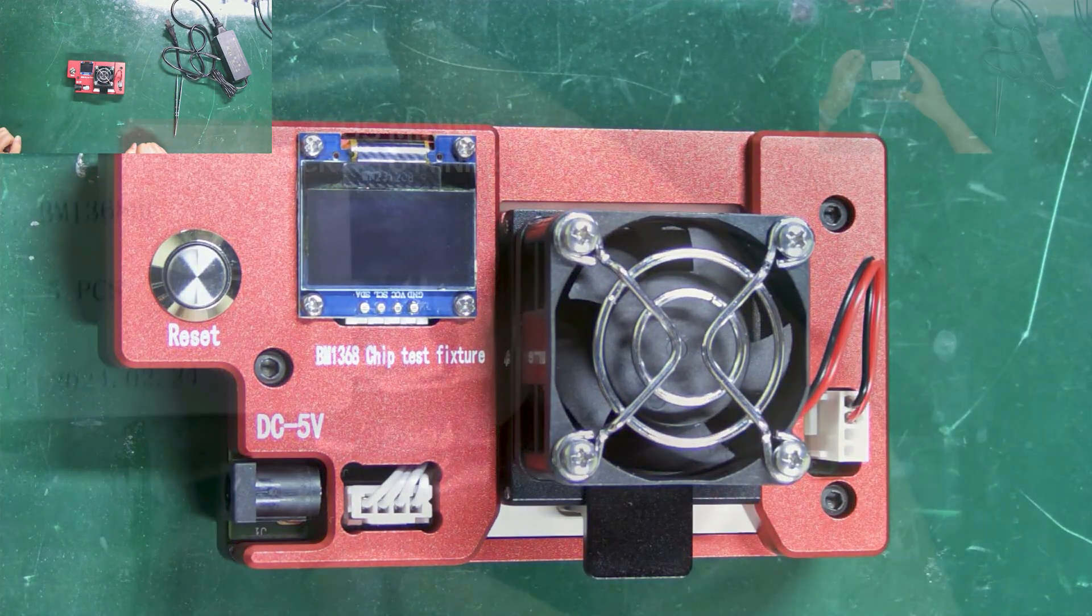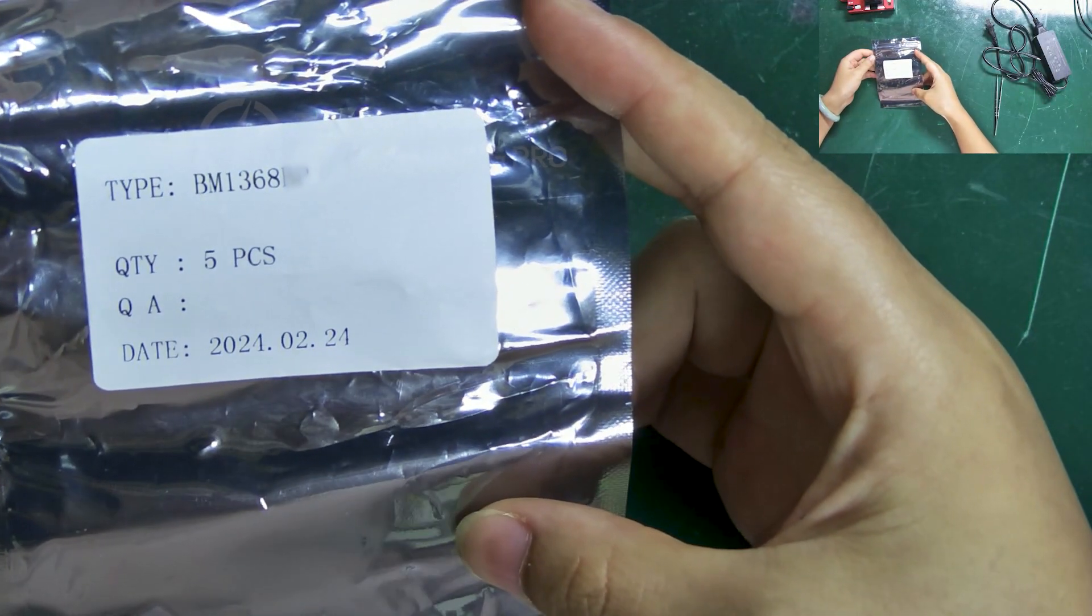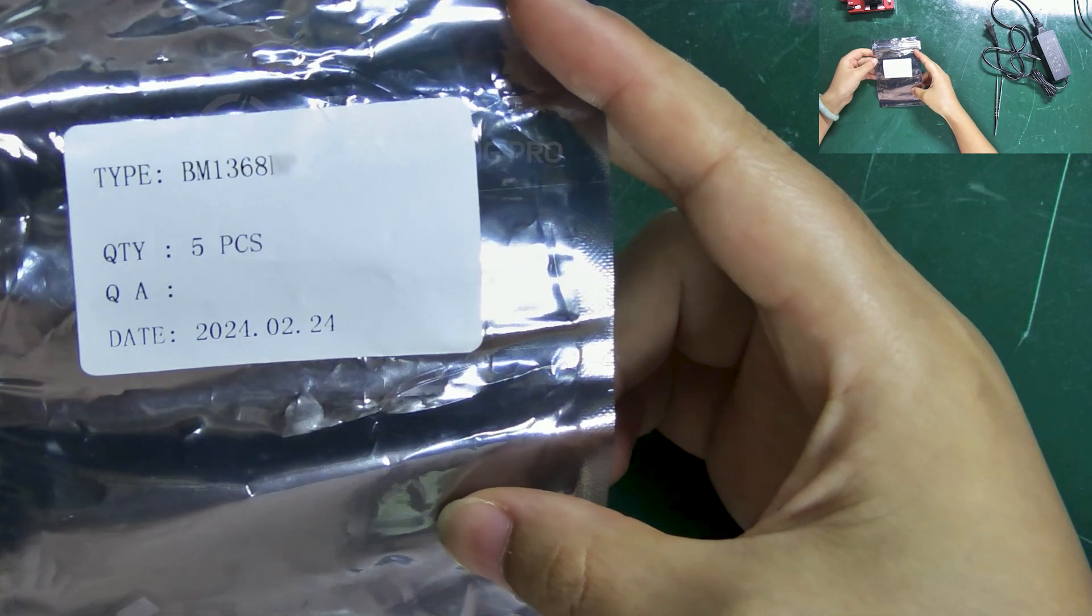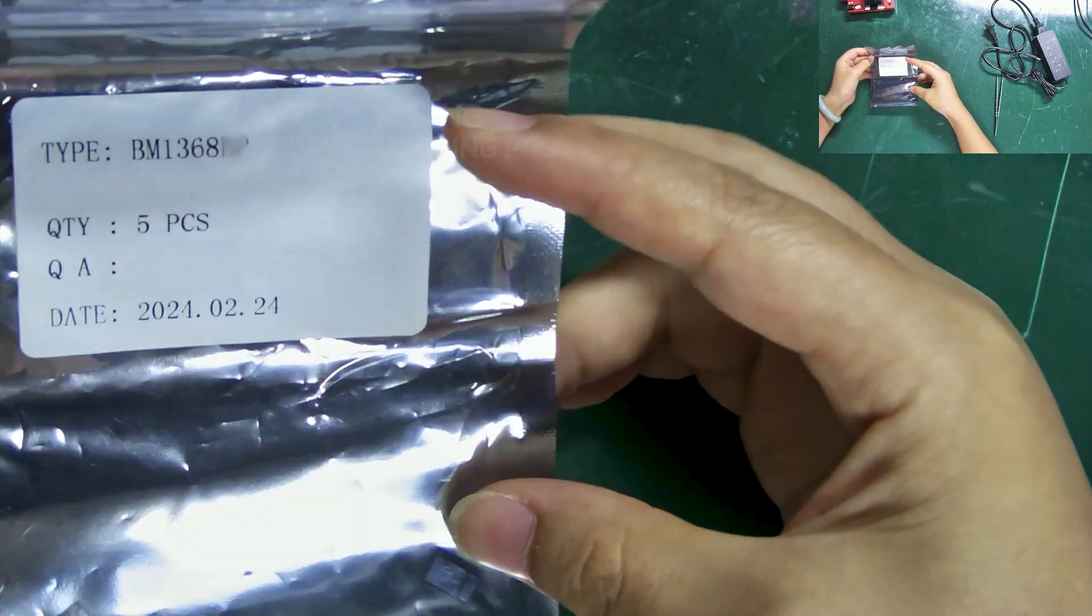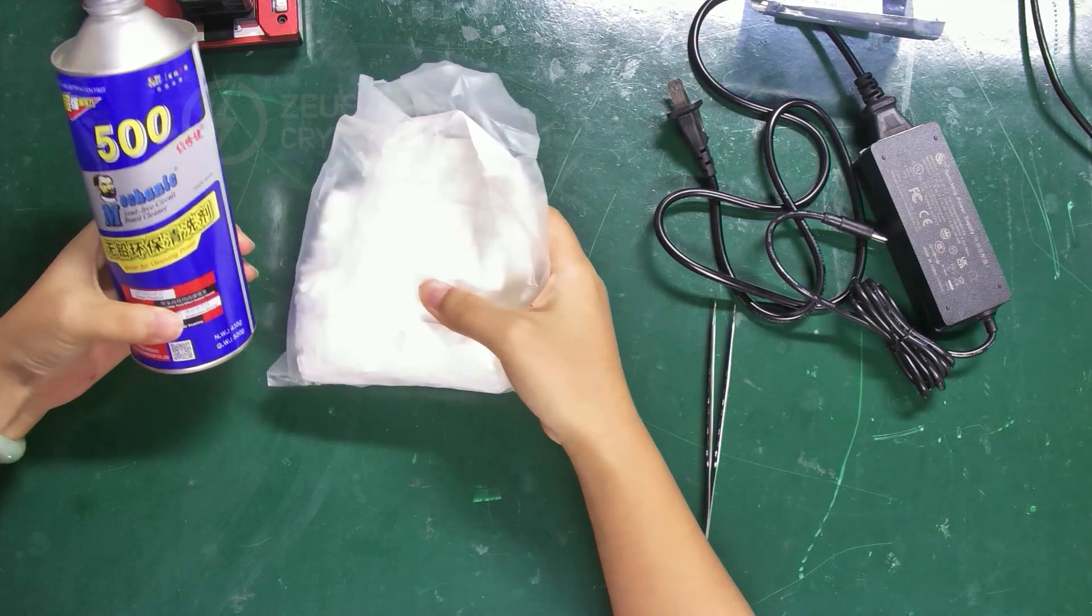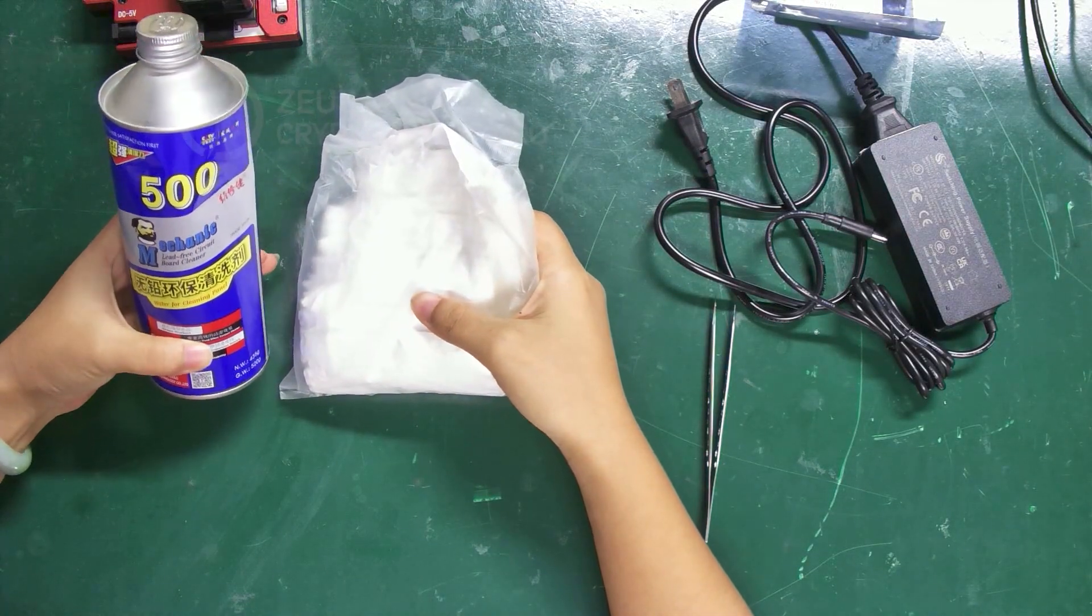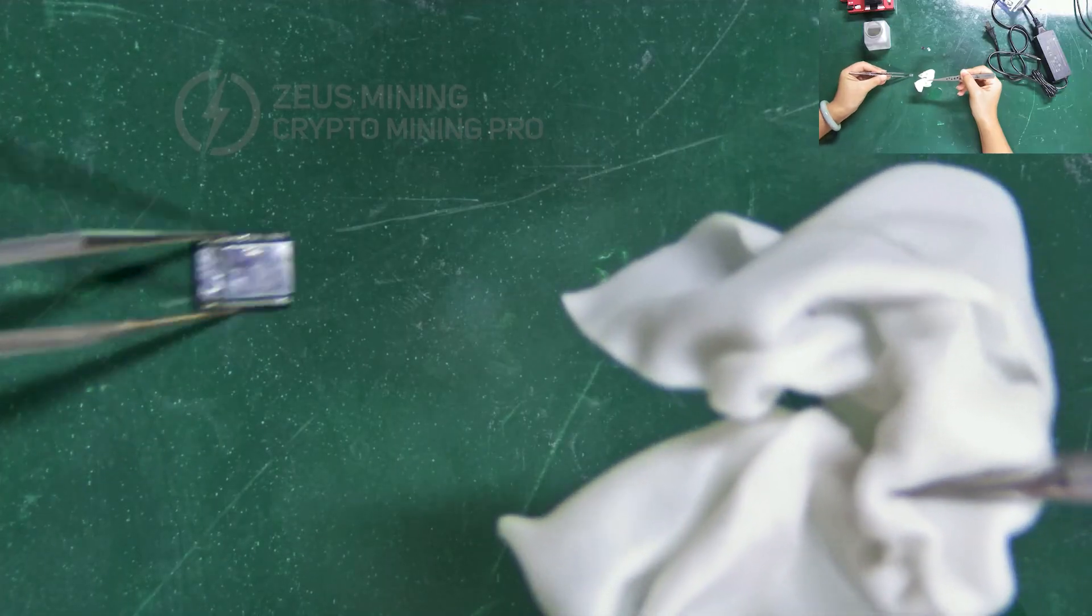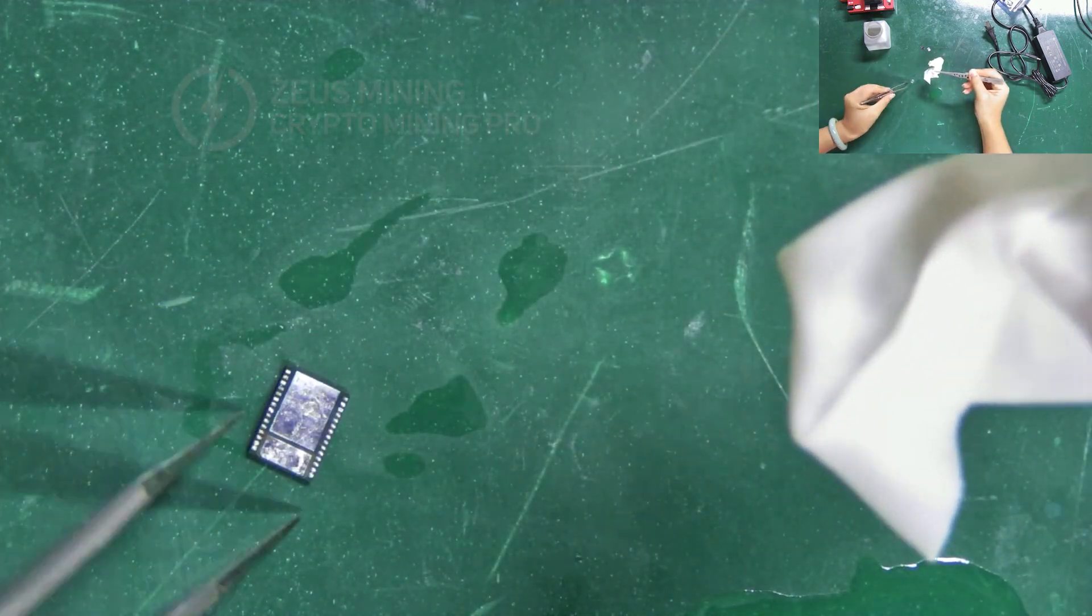Today I am going to test the BM1368 PB chip. Since they are secondhand chips, I need to clean them with board washing water and dust-free cloth. Of course, new ones do not need to be cleaned.